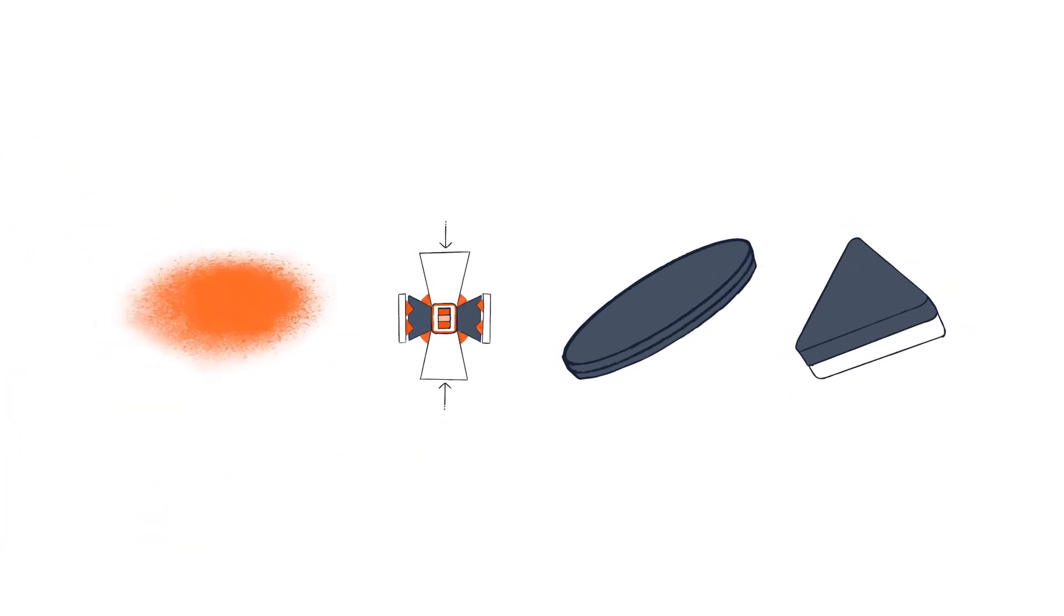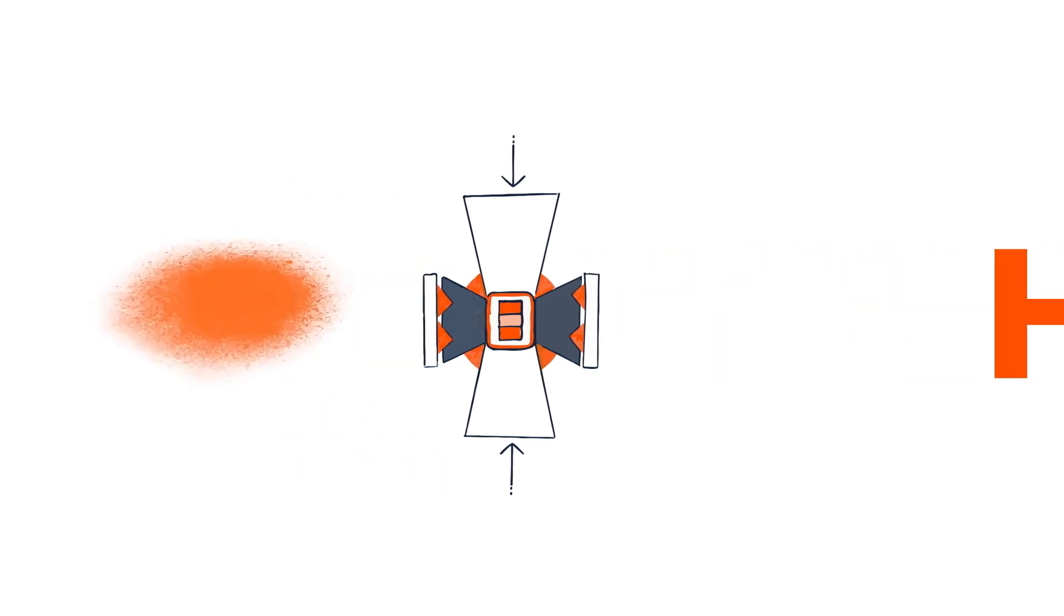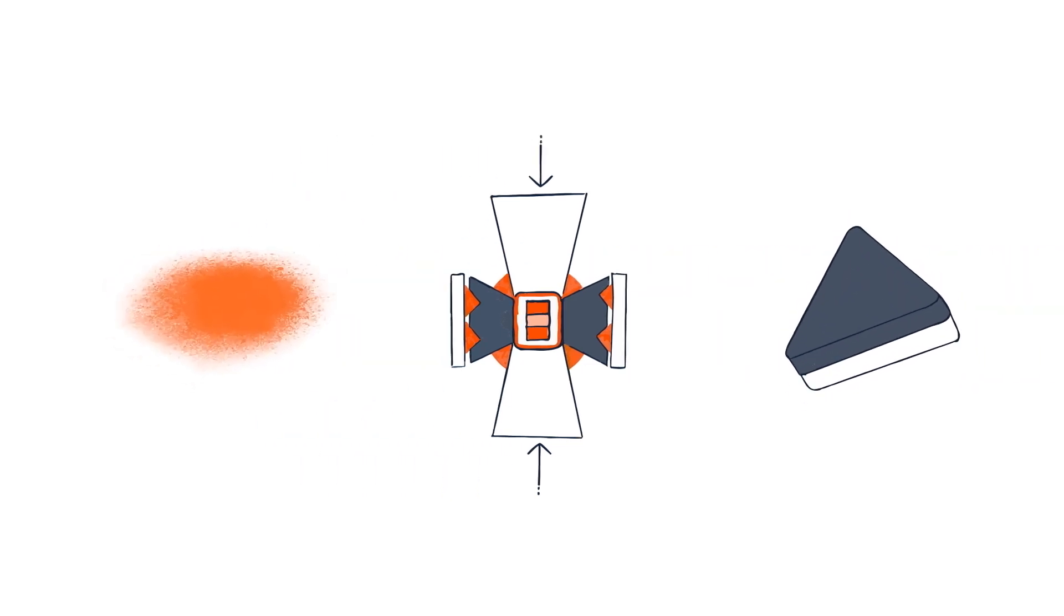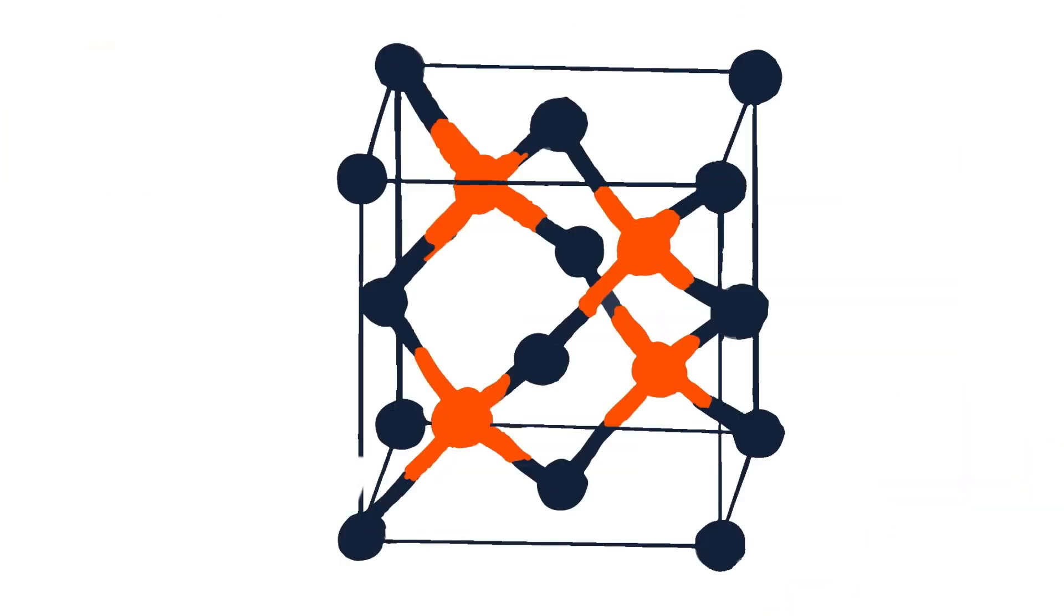The special process we use to synthesize the material, high pressure, high temperature (HPHT), transforms hexagonal boron nitride (HBN) into its cubic form, CBN.